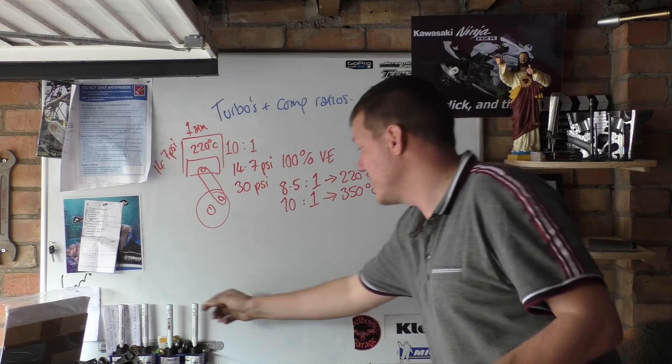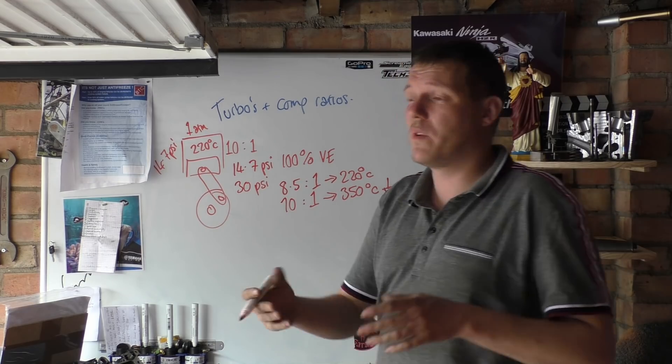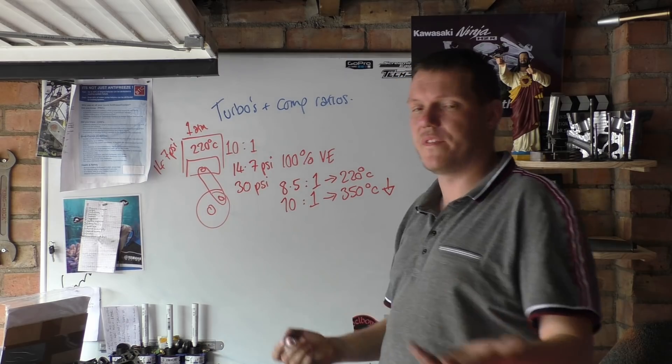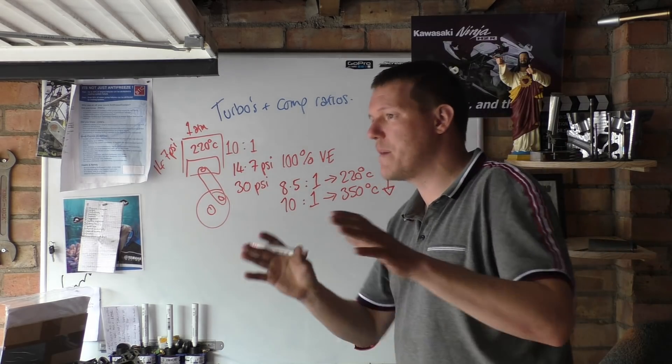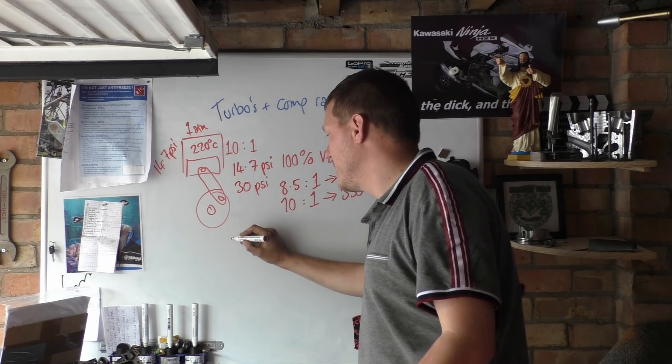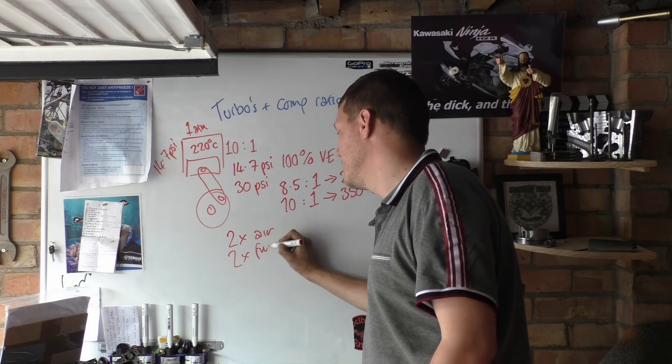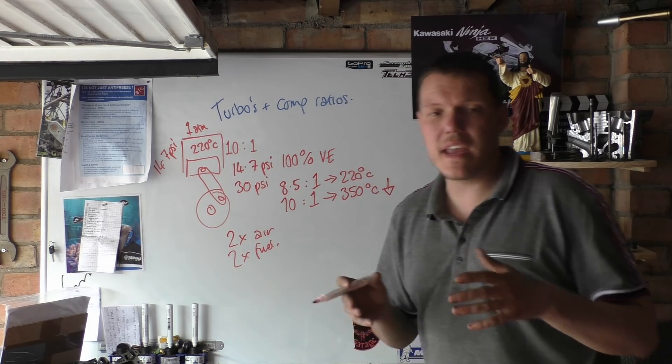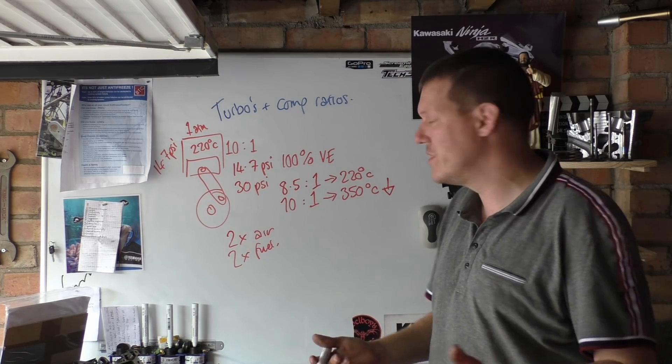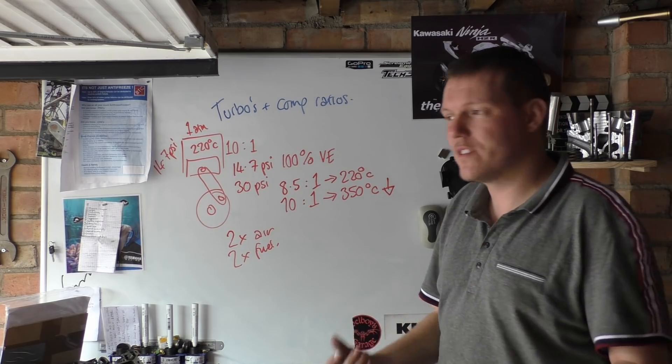The fact is we're sticking in 30 psi of air. We're going to go with pressure and density and say they're exactly the same - there's a slight differential but we'll ignore that. You're putting two times the air in, which means we can put two times the fuel in. Even if we run 8.5 to 1 instead of our 10 to 1 that we originally had, or 9 to 1, we've got twice the amount of air and twice the amount of fuel.